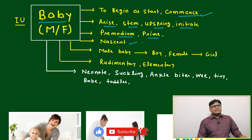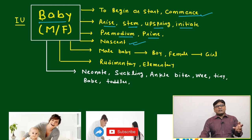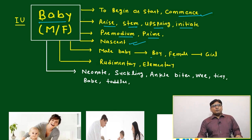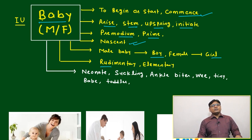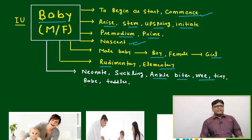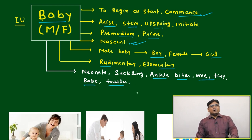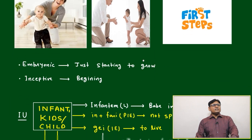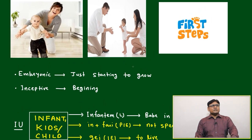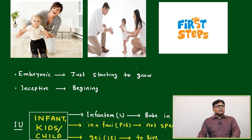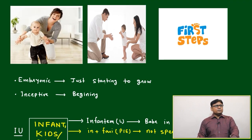Nascent means who is just starting. After that: male baby, boy, female, girl. Rudimentary, elementary — all will be related to baby, or you can say related to afterwards. Uncle, bitter, tiny, toddler — all we know. We will come to a little bit more through pictures to understand better.